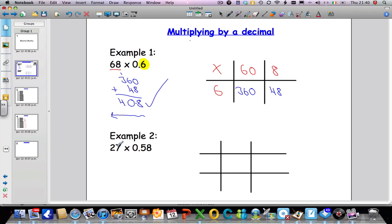OK, let's look at example 2. We've got 27 multiplied by 0.58. And once again, we're going to set it out using a grid method. Very, very similar to long multiplication.